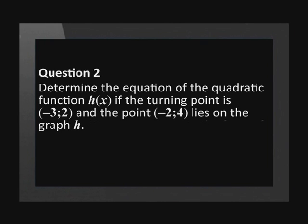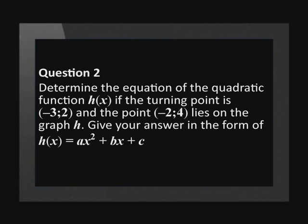Moving on to Question 2. Determine the equation of the quadratic function h of x if the turning point is negative 3 and 2, and the point negative 2 and 4 lies on the graph h. Give your answer in the form h of x equals ax squared plus bx plus c.